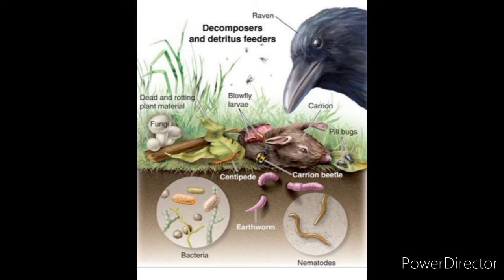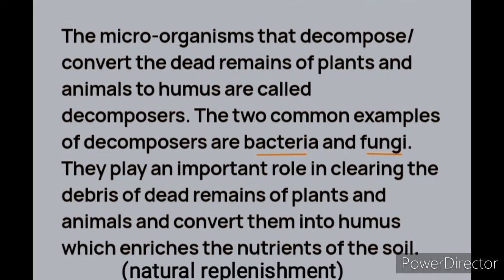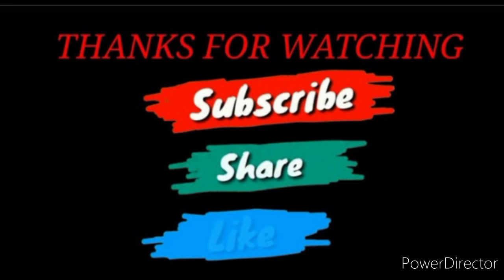These inorganic substances include carbon dioxide, water, and nutrients. This process is called decomposition. The simple inorganic substances go into the soil and are used once more by plants, making decomposers useful in the natural replenishment of the soil.